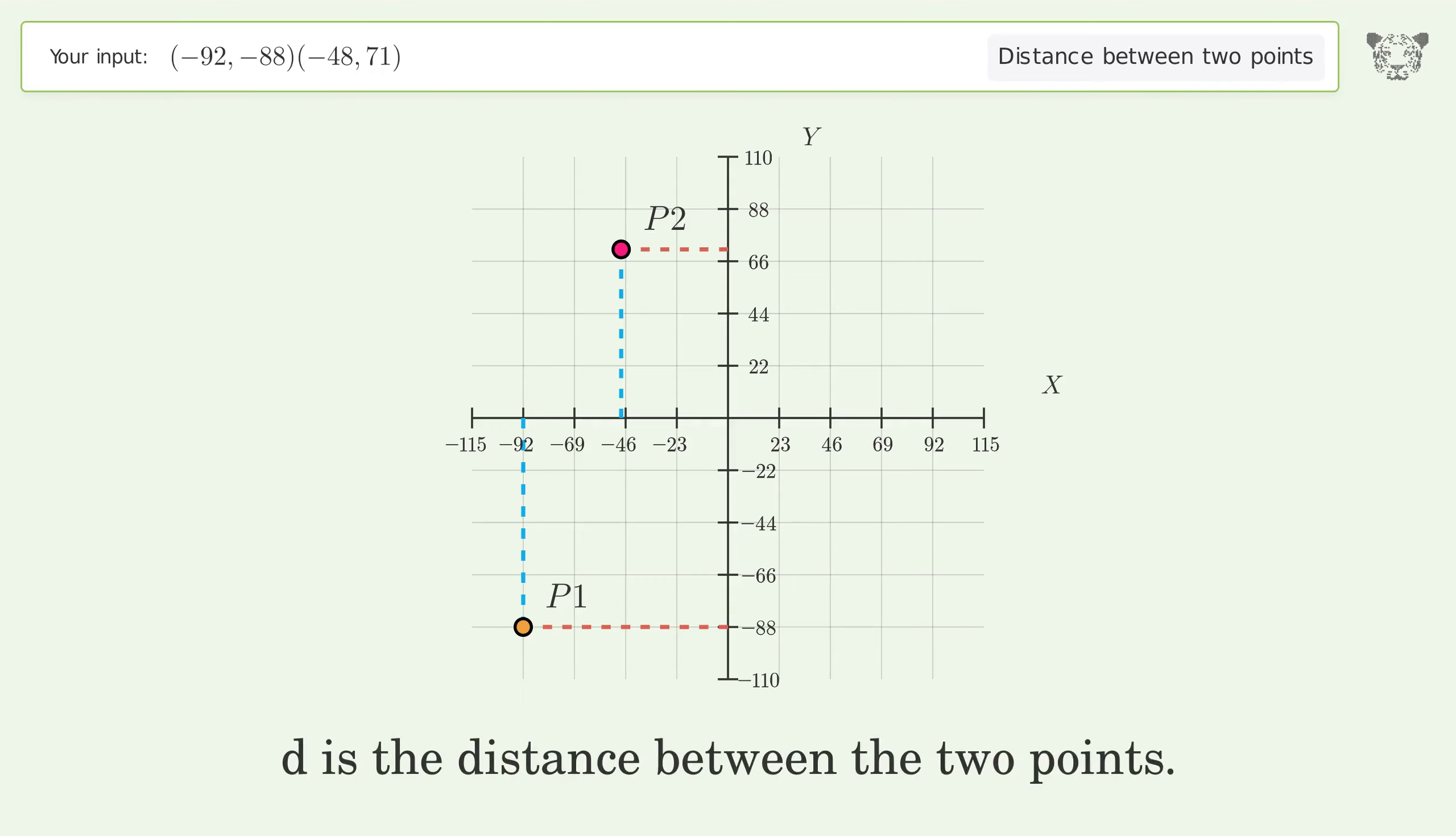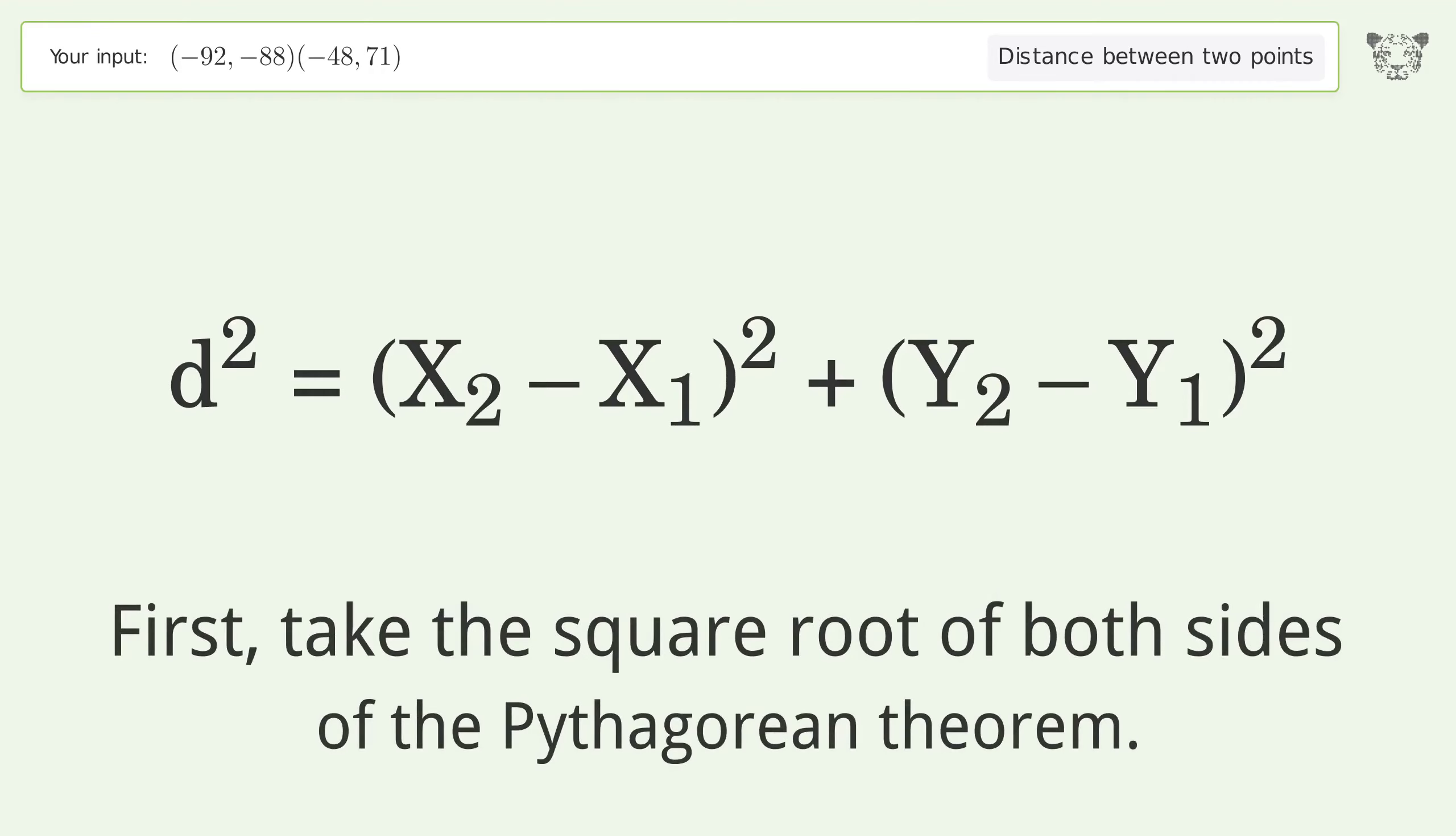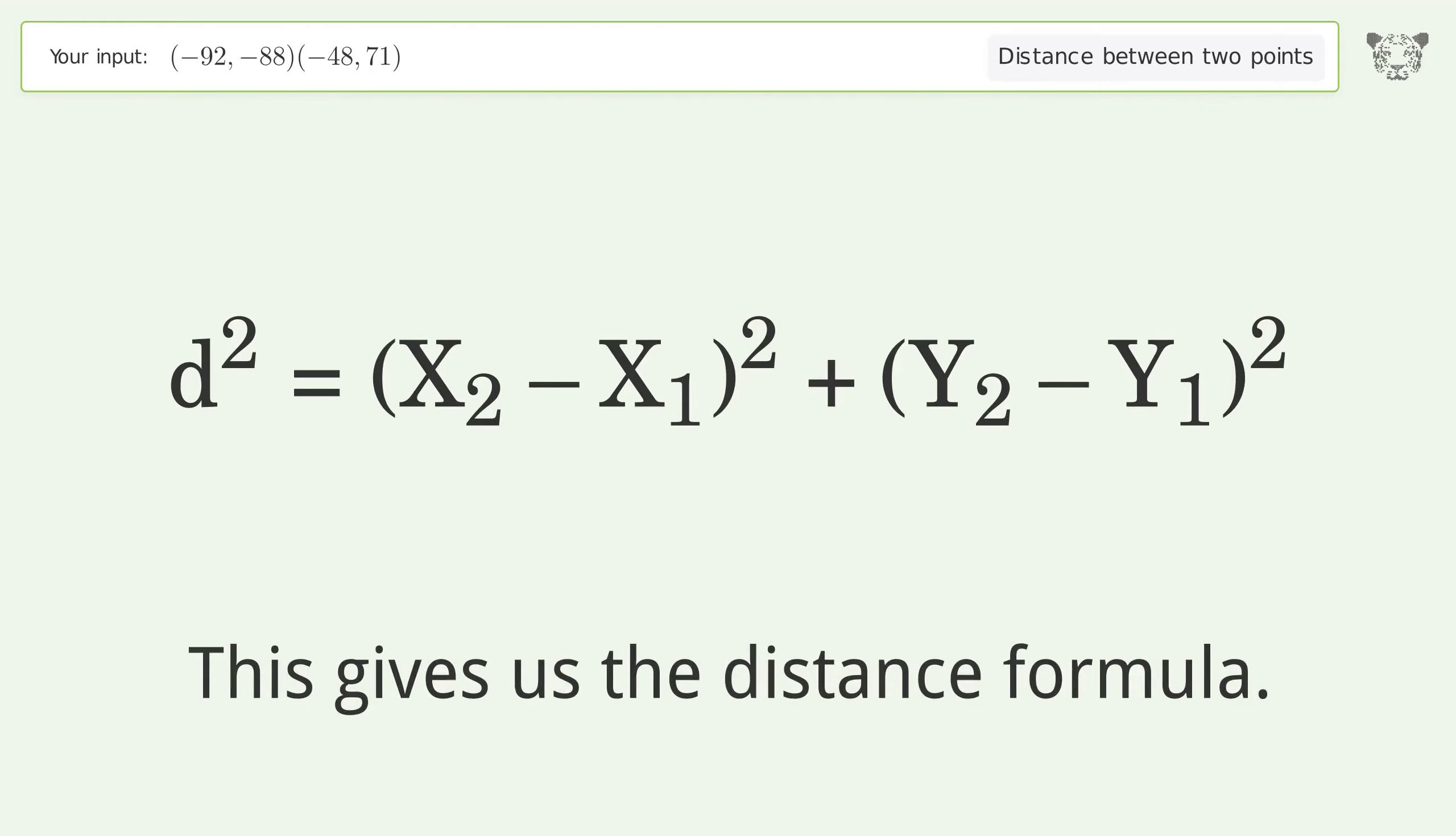d is the distance between the two points. First, take the square root of both sides of the Pythagorean theorem. This gives us the distance formula.